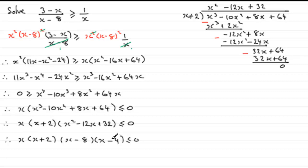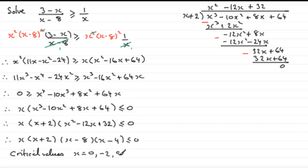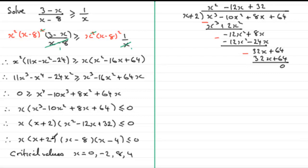The critical values are the values that make each factor equal to 0. So the critical values are x equals 0, x equals minus 2, x equals 8, and x equals 4. Now I need to sketch the graph of x(x plus 2)(x minus 8)(x minus 4) to help read off the solution.